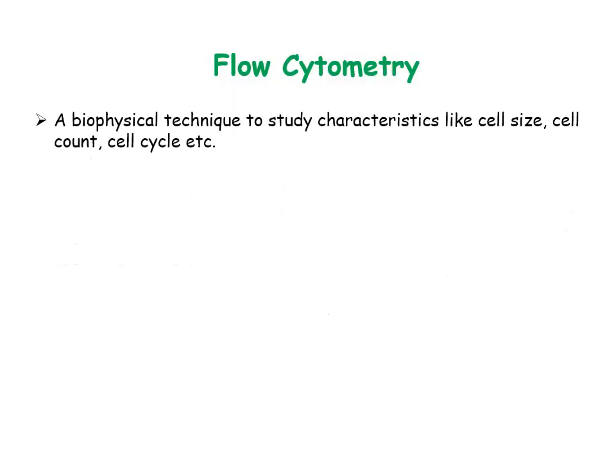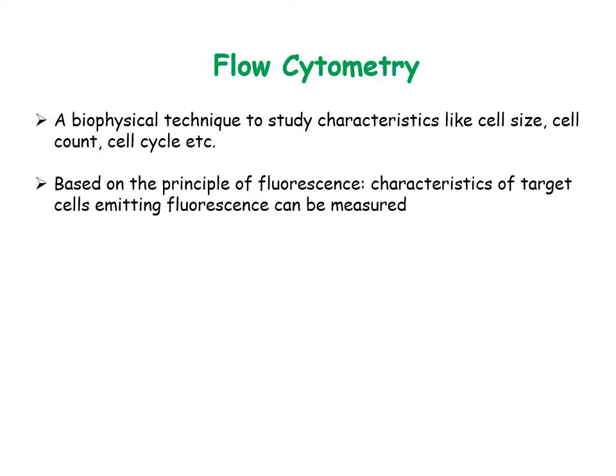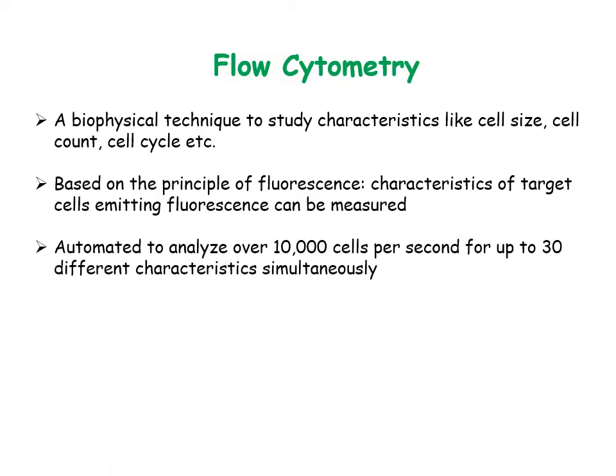Flow cytometry is a biophysical technique to study cell characteristics such as cell size, cell count, cell cycle, etc. It is based upon the principle of fluorescence. Cells expressing fluorophore are distinguished from other non-target cells in a mixture to study their characteristics. It is an automated and extremely high throughput technique which analyzes over 10,000 cells per second for up to 30 characteristics in a single run.